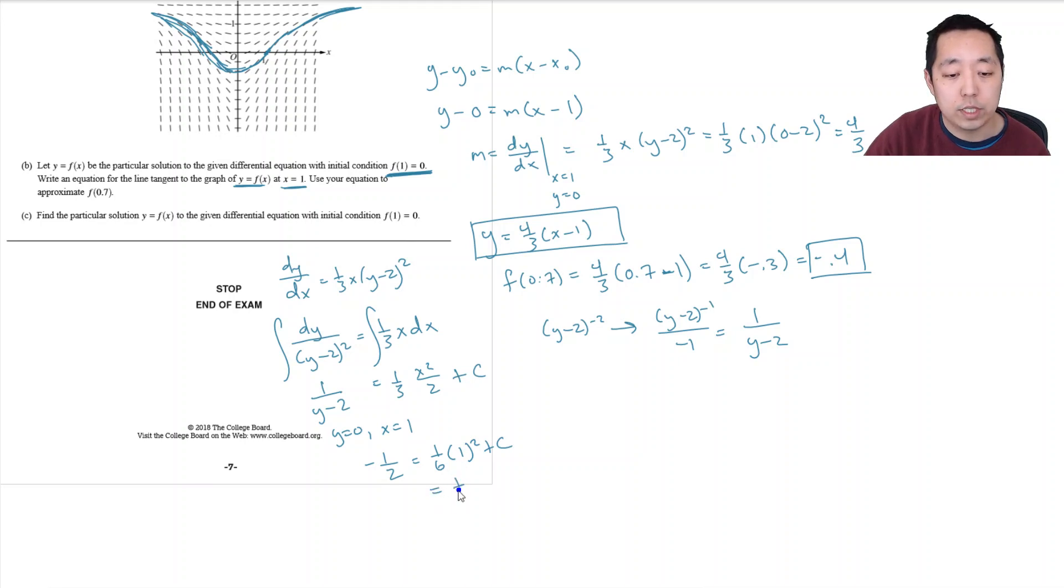So then c would have to equal one half minus one sixth. That's three sixths minus one sixth, which is equal to two sixths, or one third.